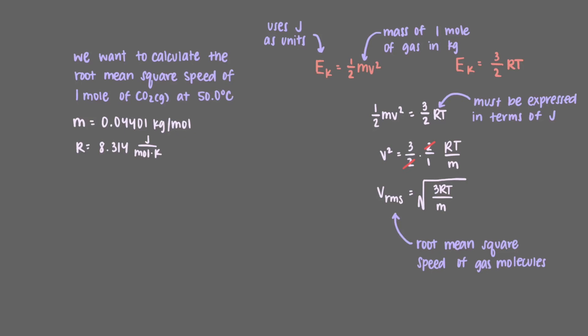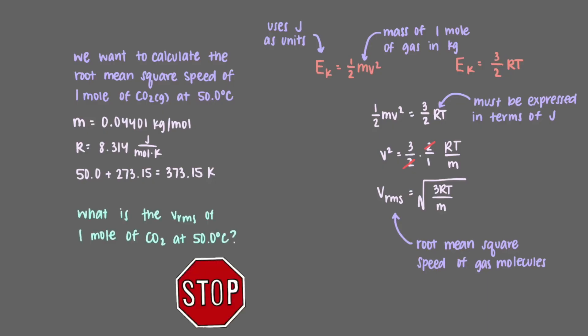The last thing we must consider is to convert the temperature given in Celsius to that in Kelvin. We're now ready to calculate the root mean square speed of carbon dioxide at 50 degrees Celsius. What is it?